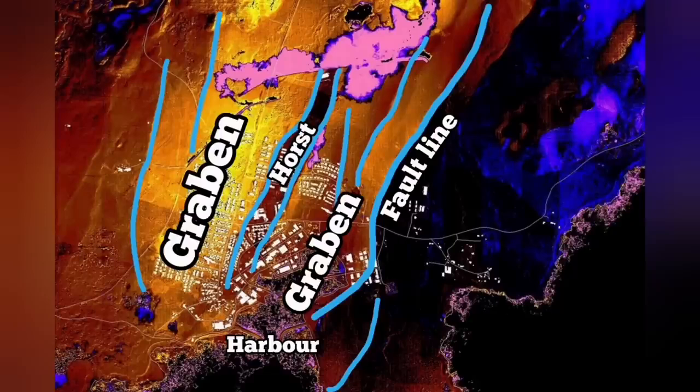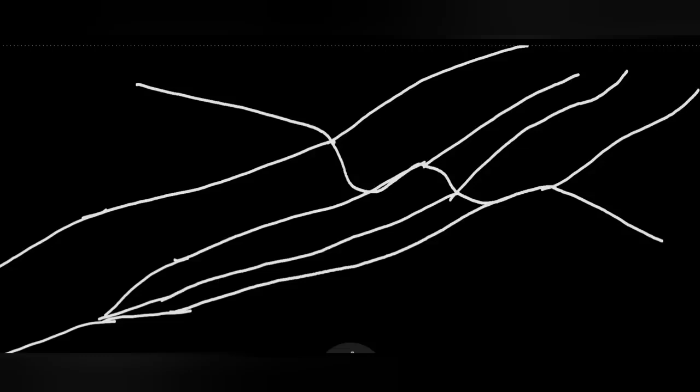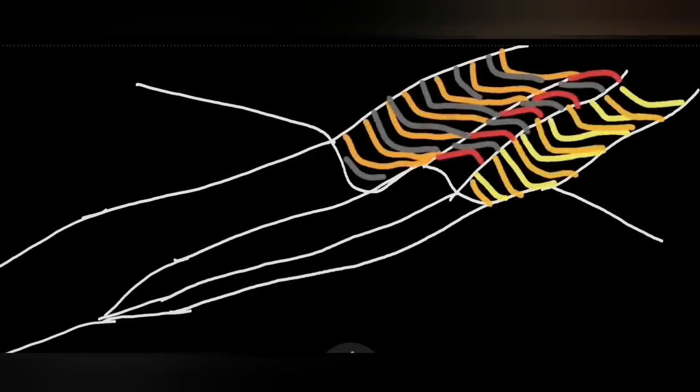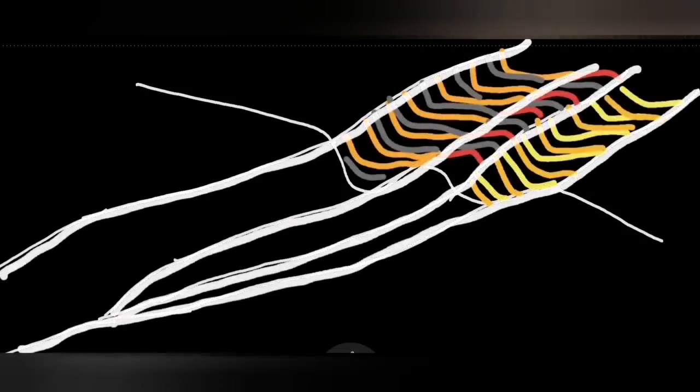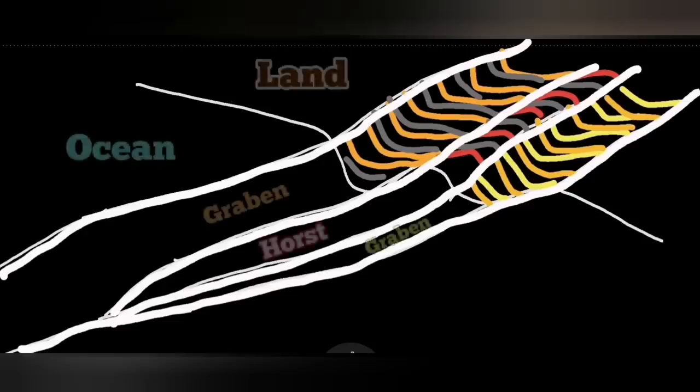This is now going to change it seems. Off the shore of the Grindavik, in the harbor and toward the ocean, we have the continuation of this horst and graben. This is practically a rift, a rift valley.